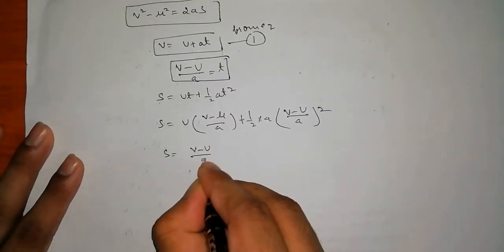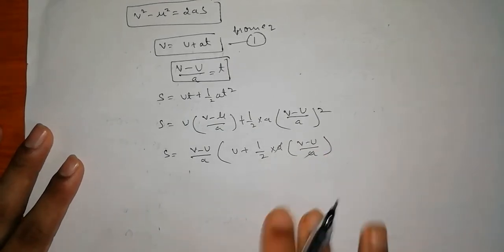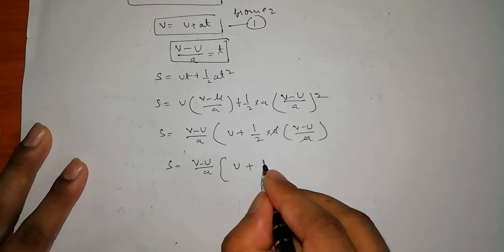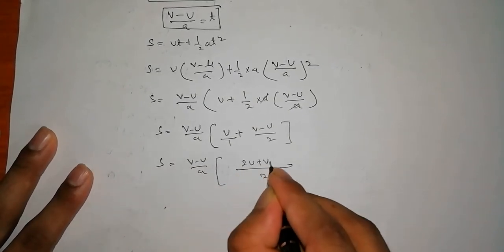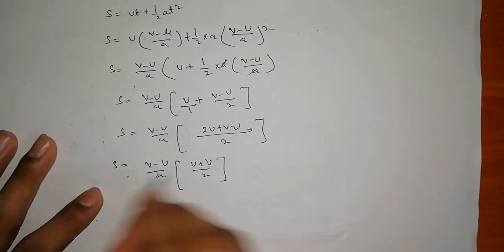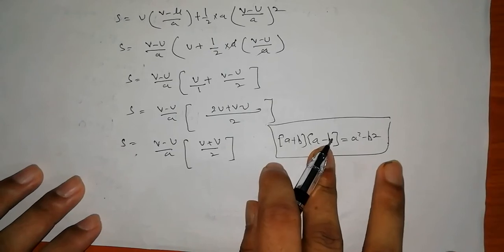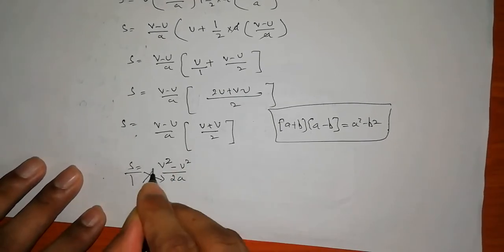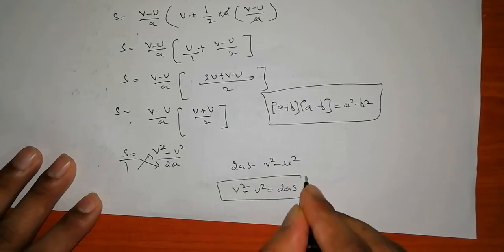Taking (V - U)/A as a common factor, S = (V - U)/A × [U + (V - U)/2] = (V - U)/A × (U + V)/2. Using the identity (A + B)(A - B) = A² - B², this gives S = (V² - U²) / 2A. Cross-multiplying: 2AS = V² - U². Finally, V² - U² = 2AS is derived.